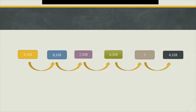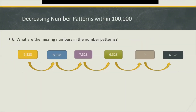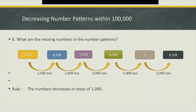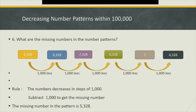Next example — what are the missing numbers in the number pattern? One thousand less, isn't it? So that means we're going to subtract one thousand to get the missing number, and the missing number is five thousand three hundred and twenty-eight.